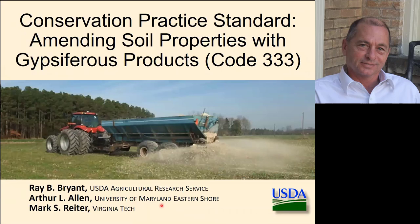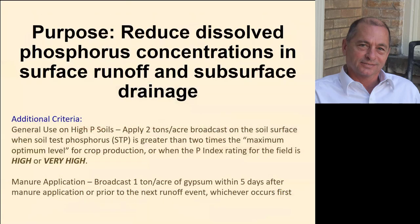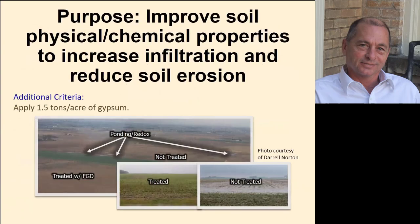I worked with colleagues at the University of Maryland Eastern Shore and Virginia Tech on conservation practice standard number 333, titled 'Amending Soil Properties with Gypsiferous Products.' There are two purposes for applying gypsum to the soil surface: first, it can reduce dissolved phosphorus concentrations in surface runoff and subsurface drainage — the calcium sulfate dissolves, and calcium precipitates with phosphorus making it insoluble. Second, it improves soil physical and chemical properties to increase infiltration by improving soil structure, thereby reducing soil erosion, sediment loss, and nutrient loss associated with particulates.